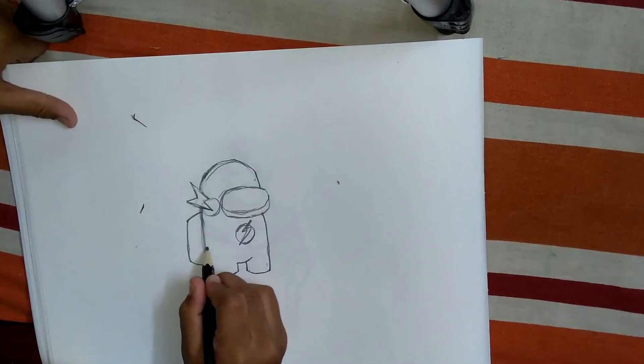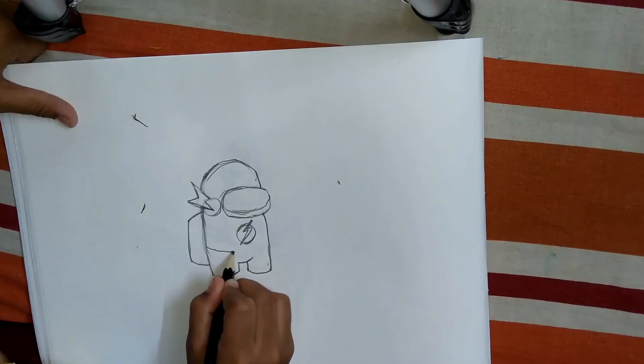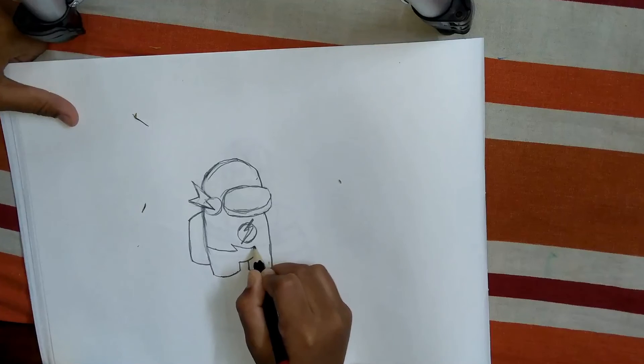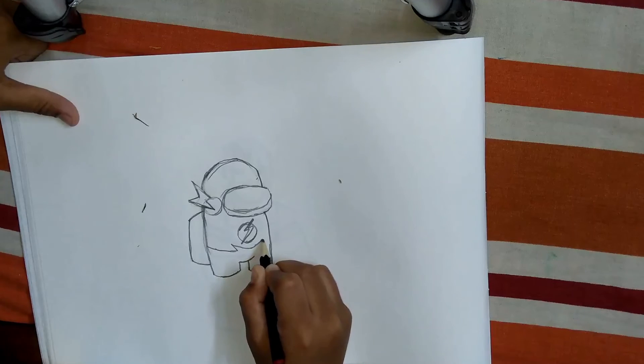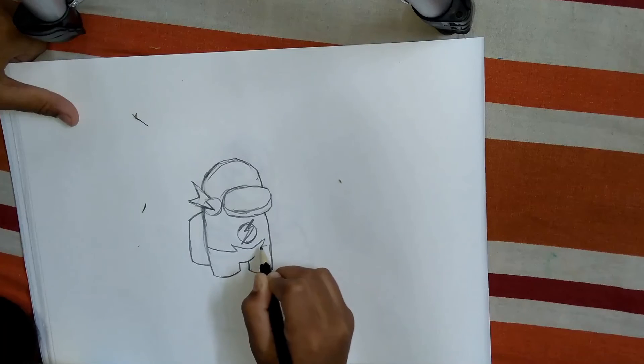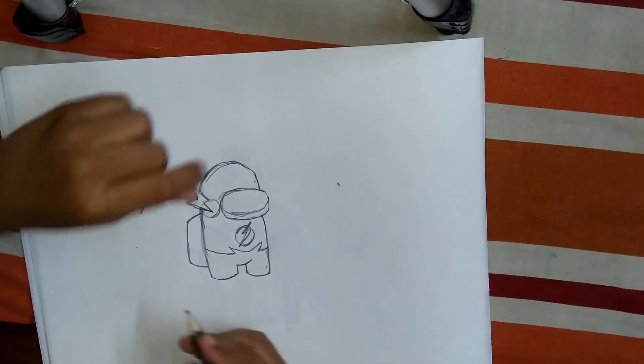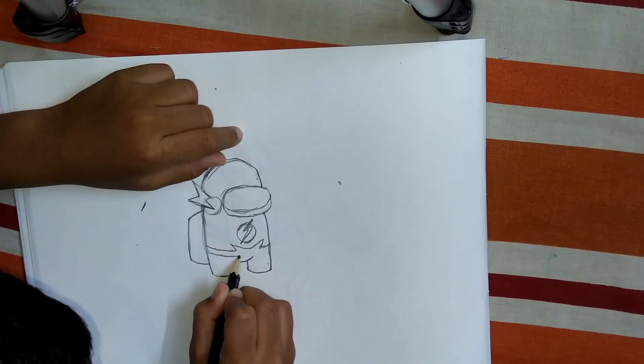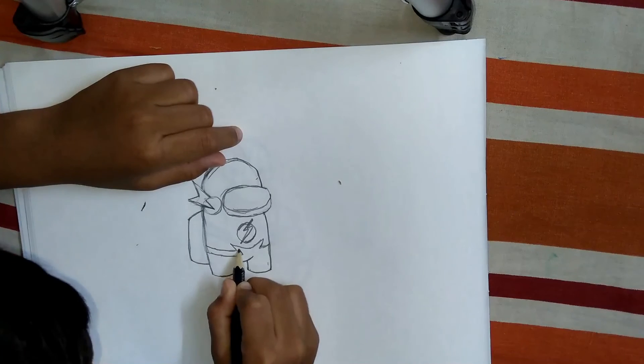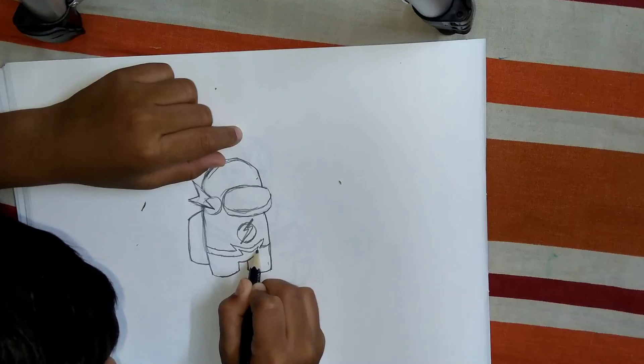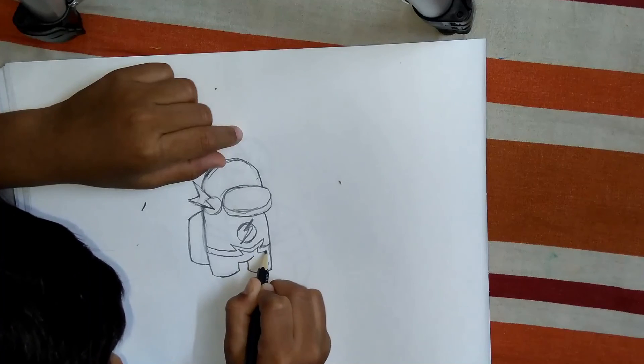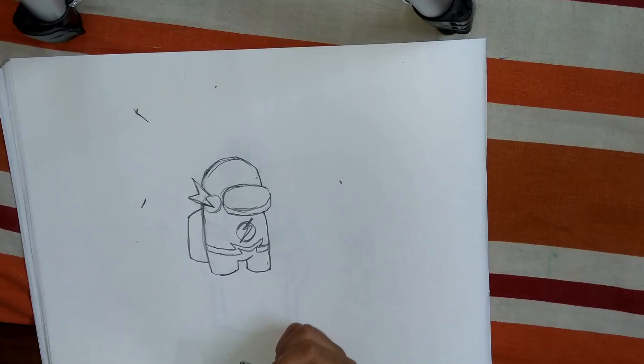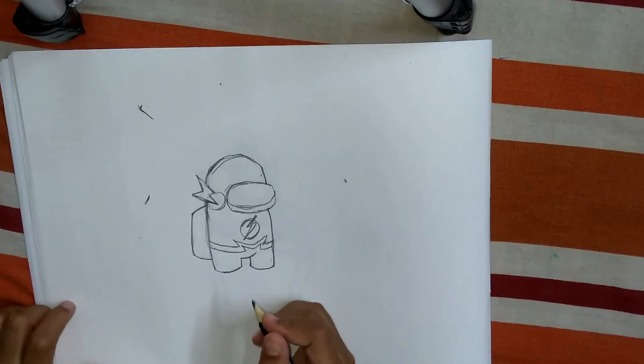After that, let's draw his belt like this, like this, and like this. Okay, double line, let's make it a double line. Next.